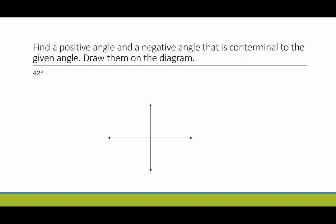We're going to find one positive angle and one negative angle coterminal to the given angle, then draw all three on the diagram. First, we're given 42 degrees. To find another positive angle coterminal to it, we add 360, giving us 402 degrees — there's one coterminal angle.